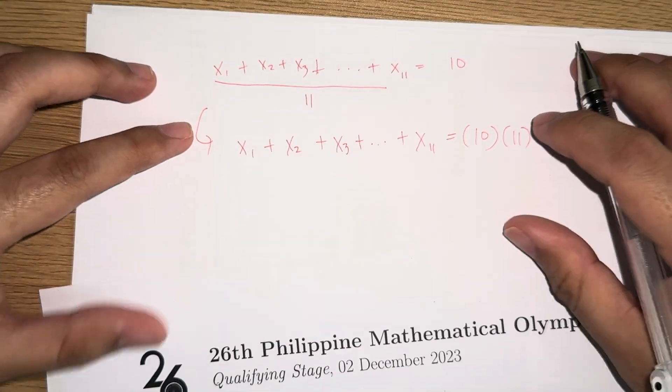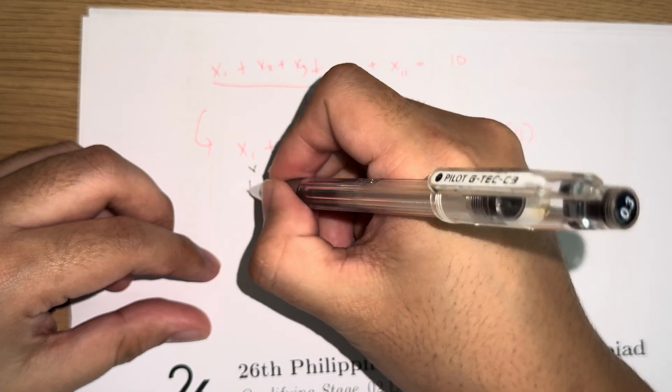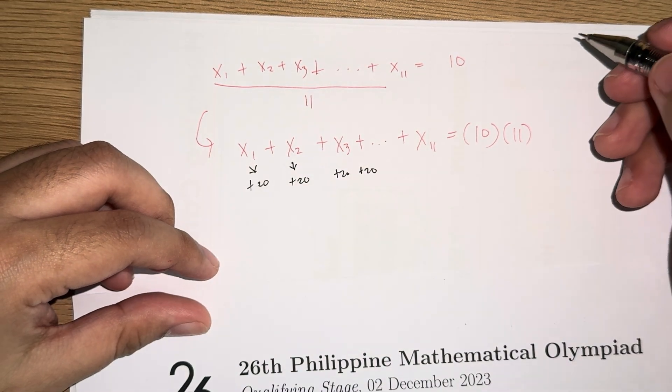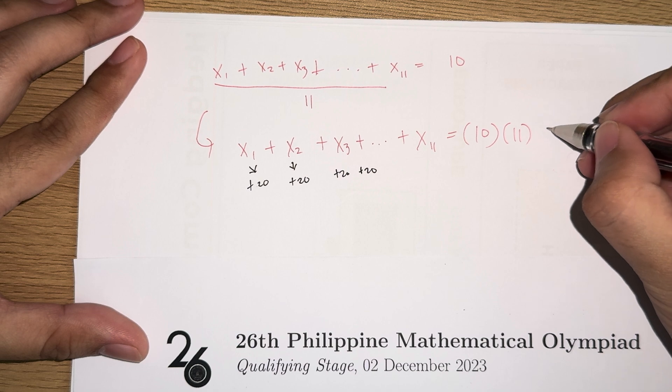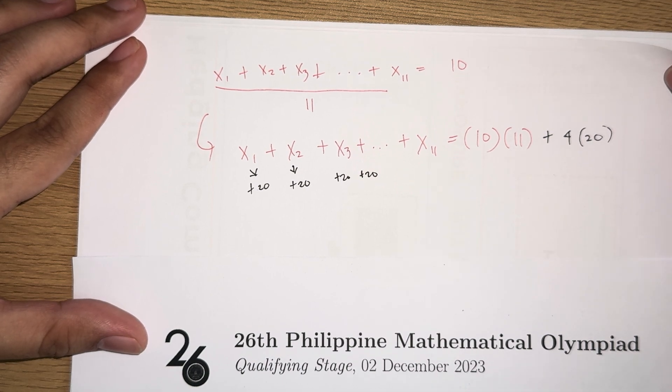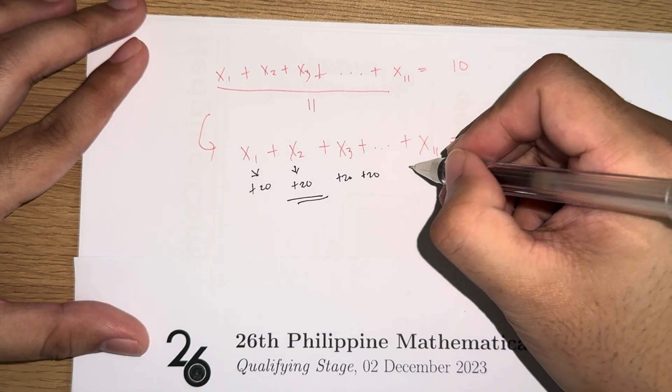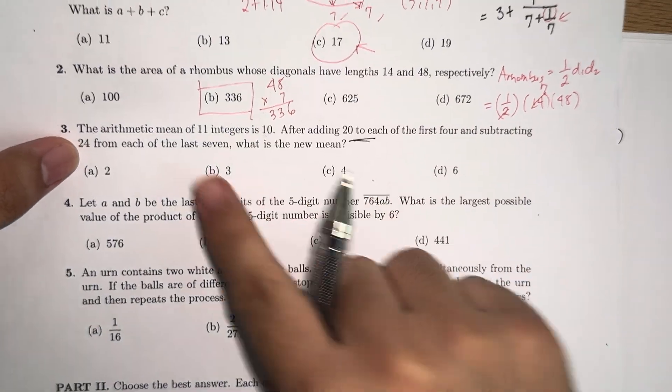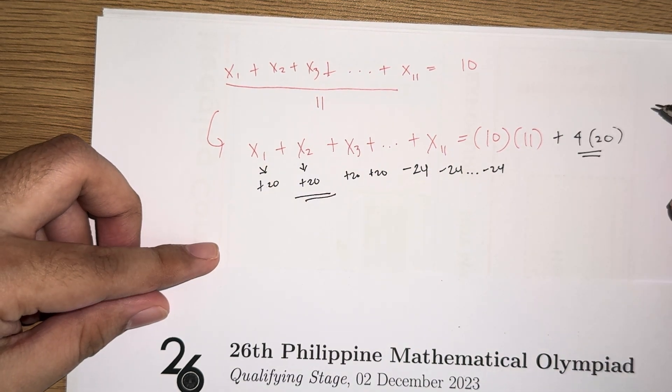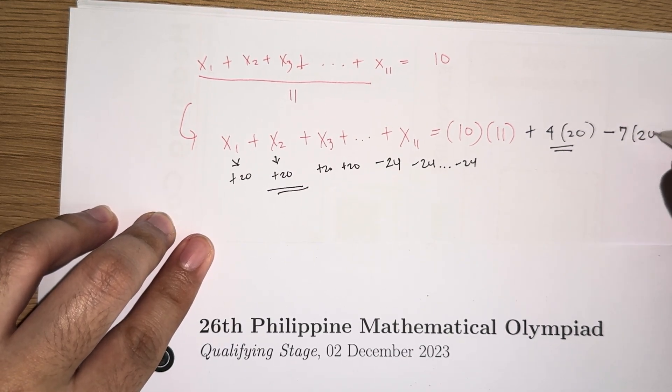And then the problem states that we should add 20 to the first 4 and then subtract 24 from each of the last 7. So from here, we add 20 to the first 4. So we add here plus 20, plus 20, plus 20, and another 20. To balance the equation, we must also add 4 twenties on the right side, as part of the addition property of equality. And then we have to subtract from the last 7, we should subtract 24. So we subtract 24 here, and another 24. Again, as a consequence of the addition property of equality, we should subtract 7 twentyfours right here.